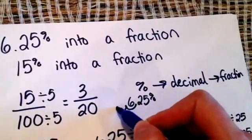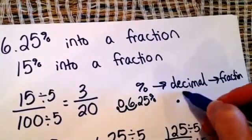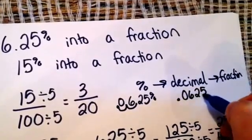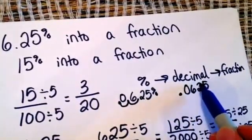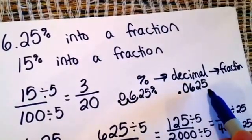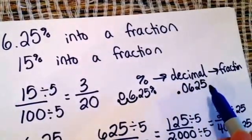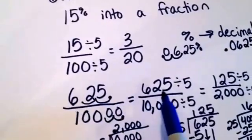So I'm going to go 1, 2, which gives me 0.0625. And this is the tenths, hundredths, thousandths, and ten thousandths. So 625 ten thousandths, which ironically is what we did here.